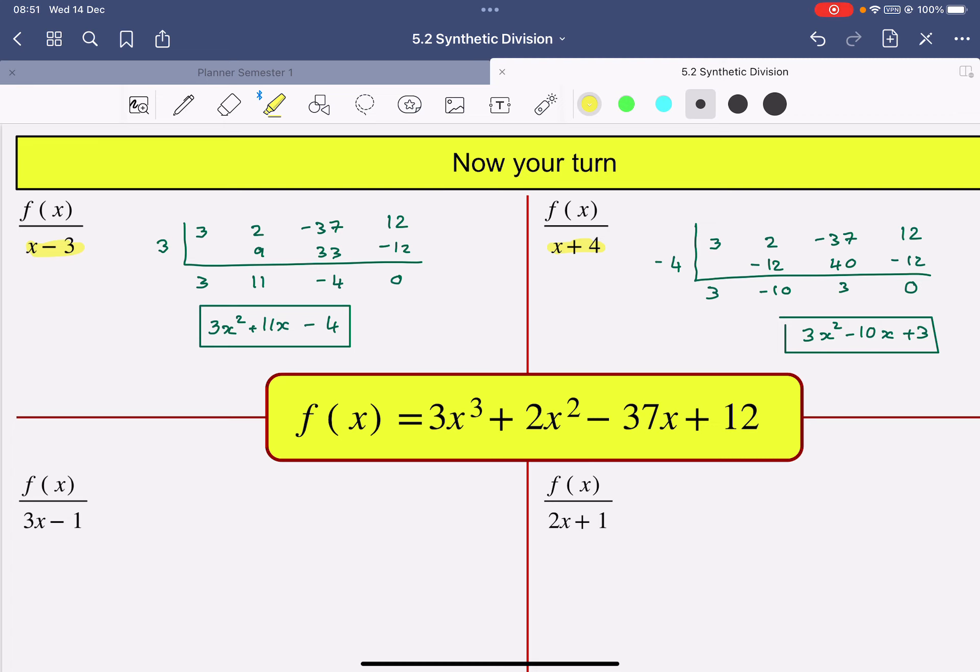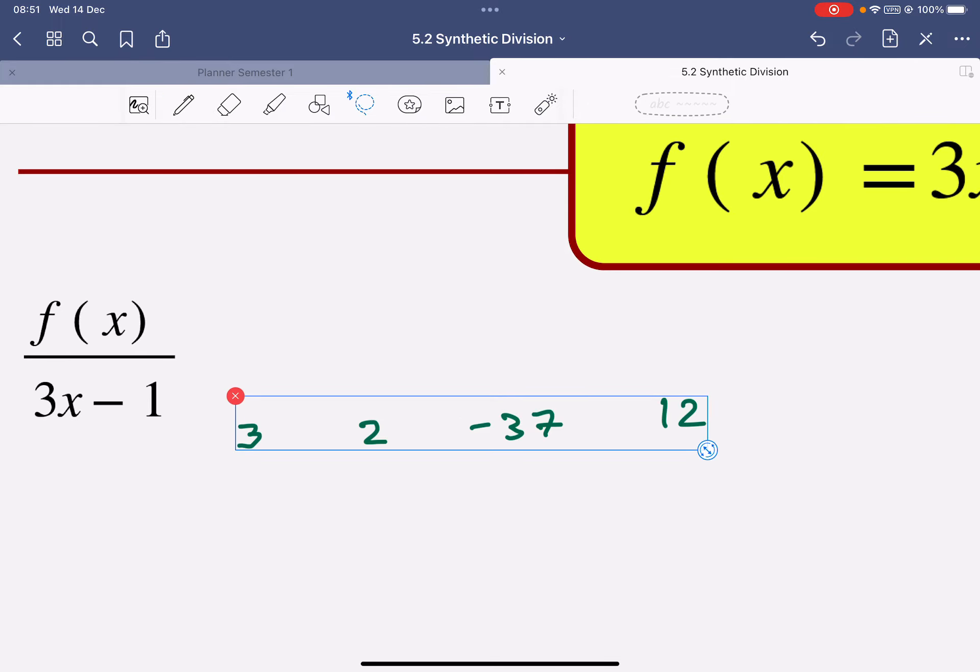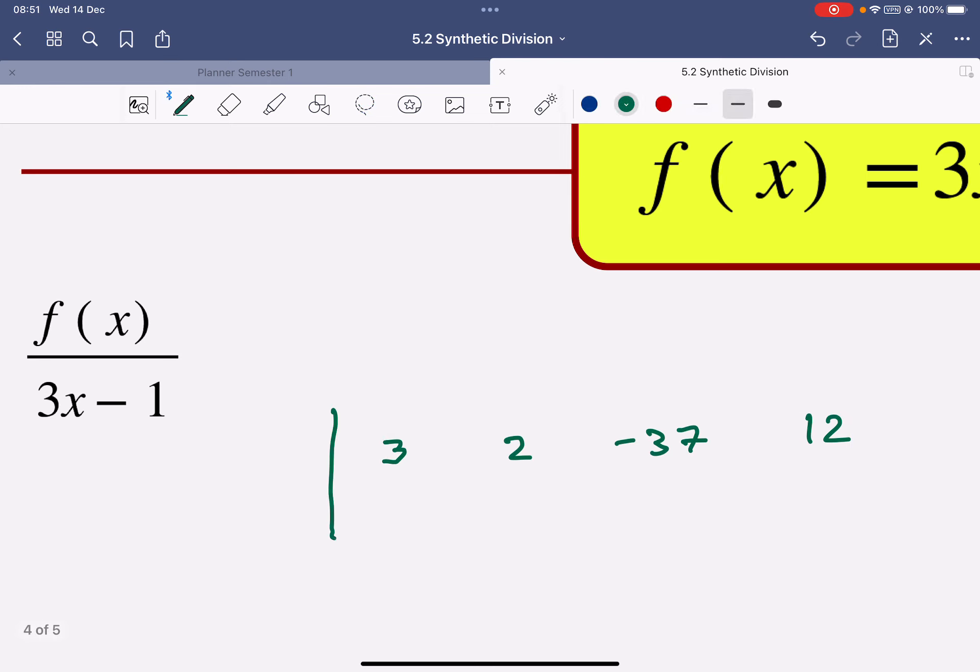Okay, let's try this one, the 3x minus 1. And again, I think I've copied the numbers down. Now, what I want to do is 3x minus 1 equals 0. x will be a third.